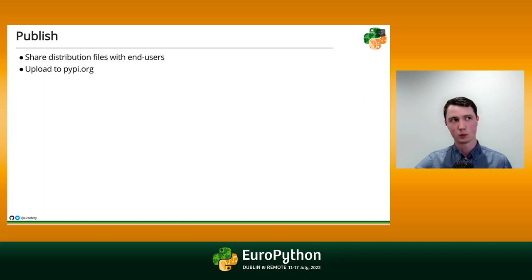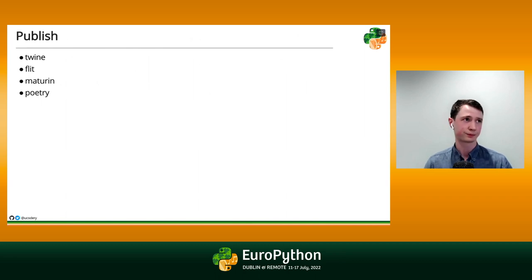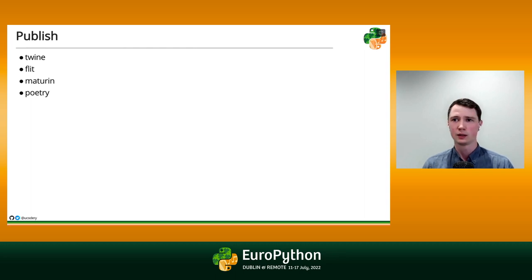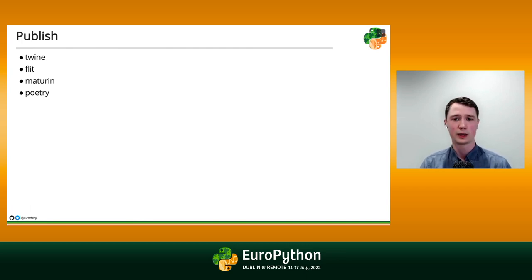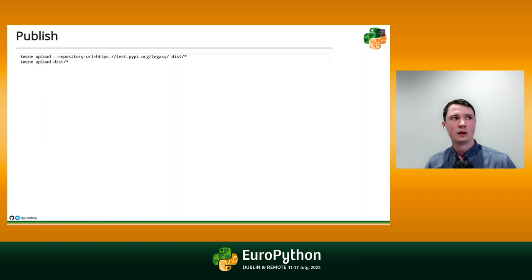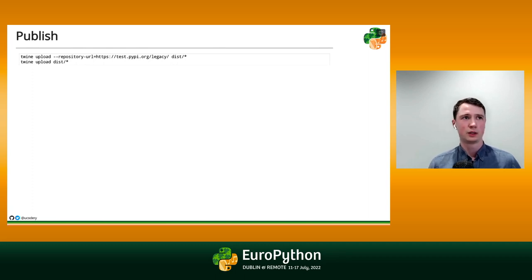We want to actually share our code and have it be discoverable and installable by others. For this, we need one more type of tool: a publisher. These are some of the publishers available — you need another third-party dependency to publish in Python. Some of the names from the build tool sections are still here, doing multiple jobs — building and publishing. But the tool we chose, build, just builds. Twine is the most general-purpose tool for uploading distributions, so we'll install it and use it to upload the distributions we just built.